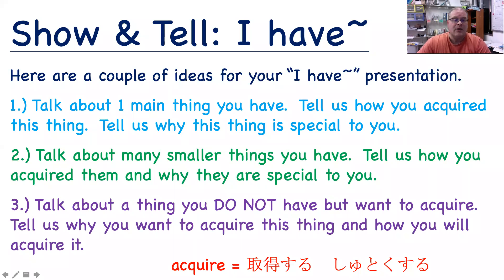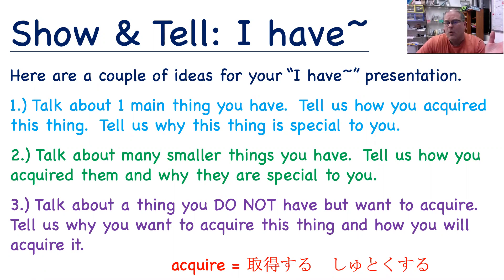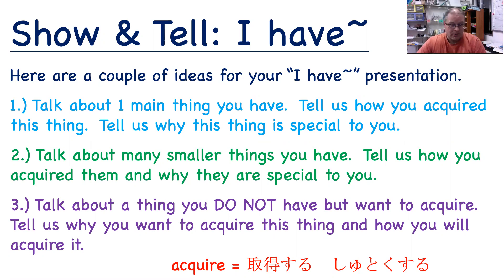Today we're going to talk about "I have." There are many ways you can do this — I'm going to suggest three. Number one: talk about one main thing you have, tell us how you acquired it — acquire is Shu Tokusuru — and tell us why this thing is special to you. Number two: talk about many smaller things you have, tell us how you acquired them and why they are special to you. Number three: talk about a thing you do not have but want to acquire, tell us why you want it and how you will acquire it. I'm going to do all three right now very quickly so you have some examples.